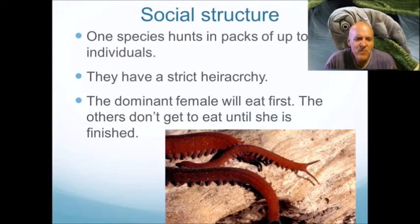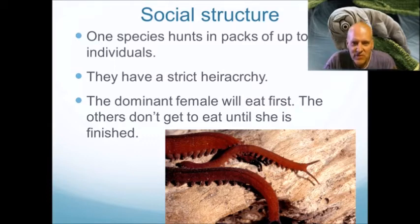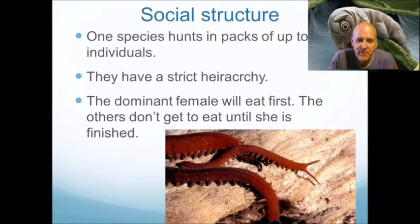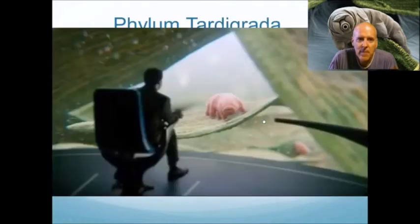Some velvet worms have a surprisingly complex social structure. One species hunts in packs of up to 15 individuals with a strict hierarchy — the dominant female eats first, and the others don't get to eat until she's finished. That's more like wolves than what you'd expect from an invertebrate. They coordinate their attacks and remember who's in charge.